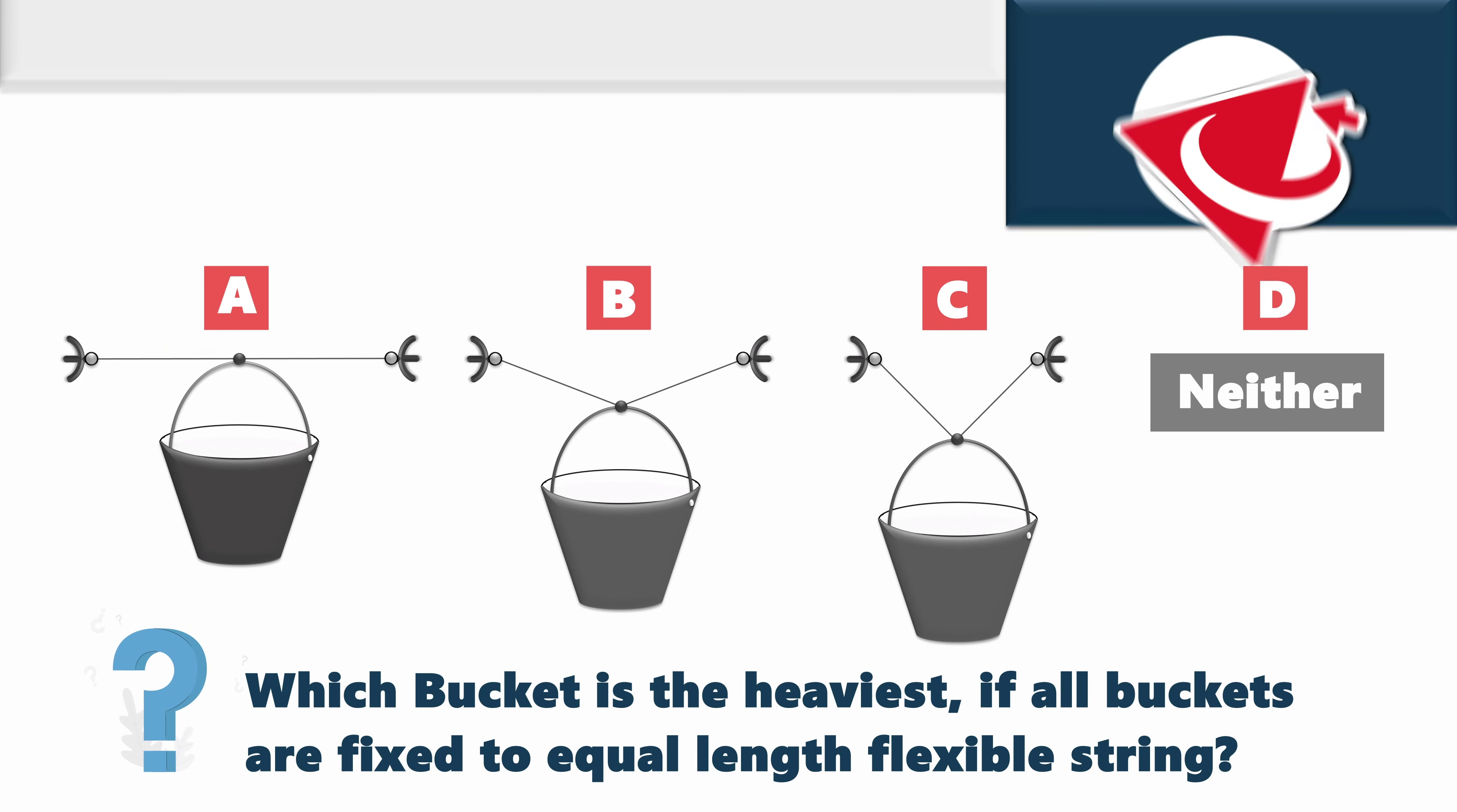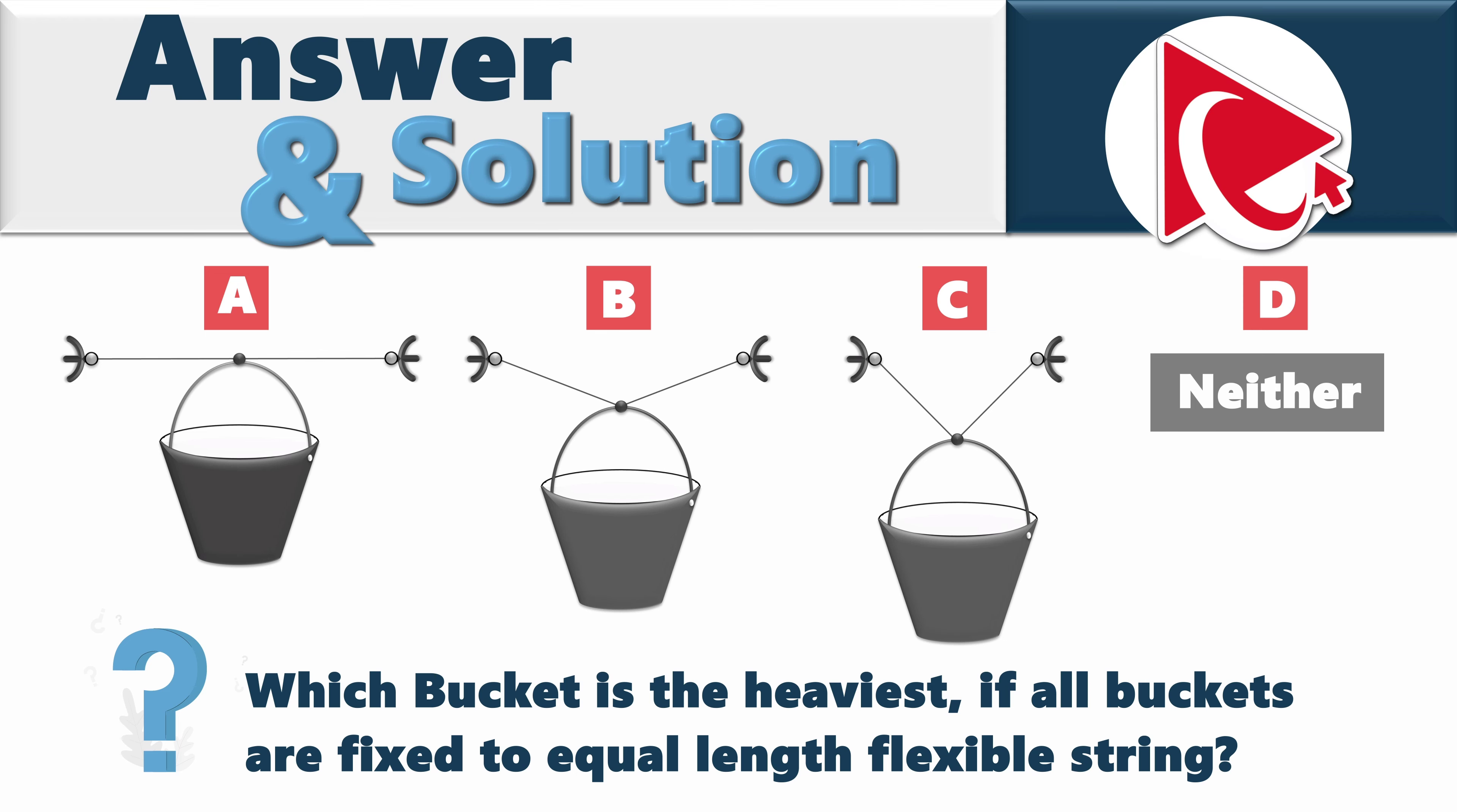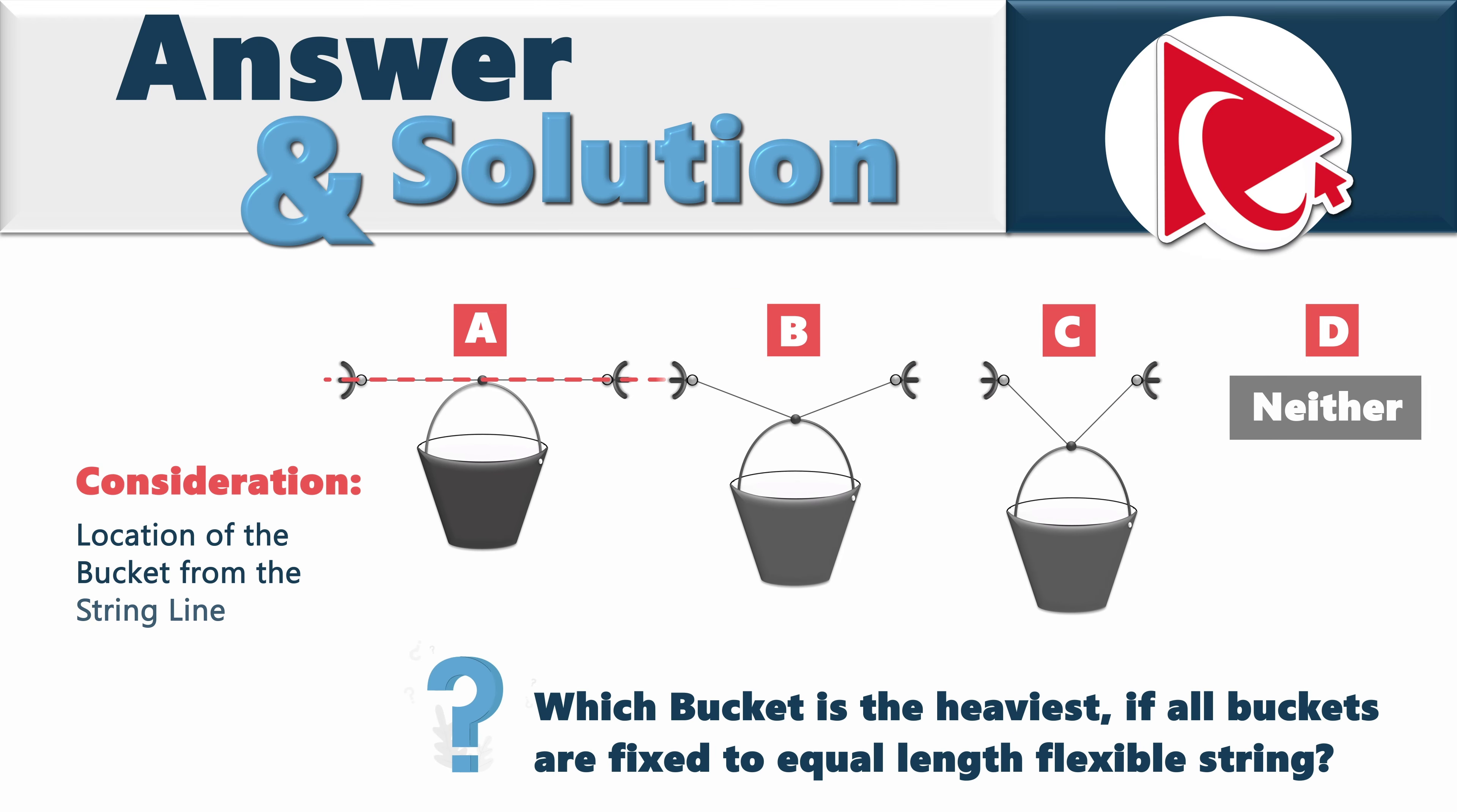To get to the answer, let's first look at the question in more details. We have 3 buckets. Each bucket is connected to the string connectors with the string of the same length. All string connectors are on the same string line. And what we can visually see is that bucket A is in the highest position, bucket B is a little bit lower, and bucket C is in the lowest position.